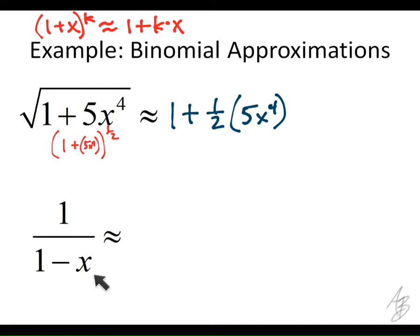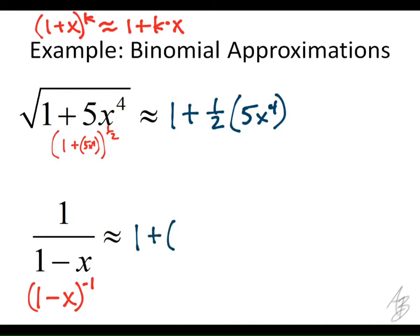For values close to 0, when x is close to 0, we want to approximate 1 over 1 minus x. How can I take this and write it in this form? It's 1 minus x to the negative 1. So that means k is negative 1. And instead of x here, what am I going to put? Negative x. Good. So the linearization — the approximate value of 1 over 1 minus x — is going to be 1 plus negative 1 times negative x, which is just 1 plus x.